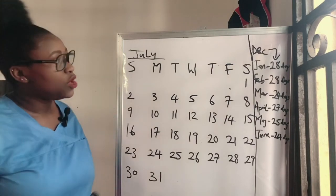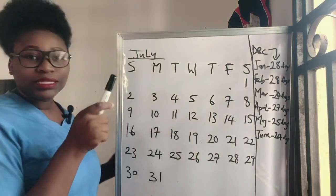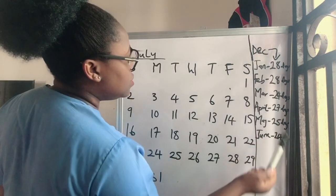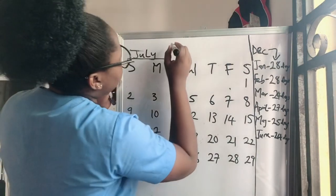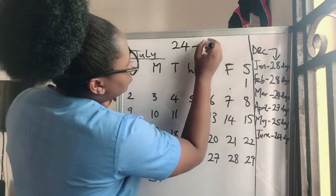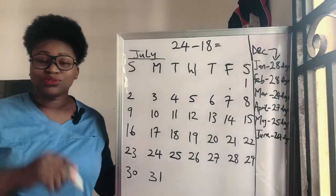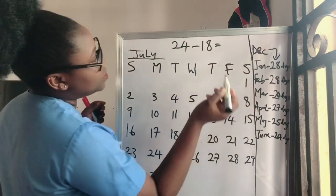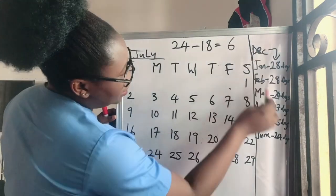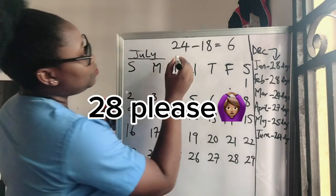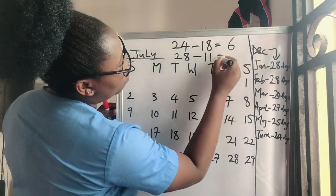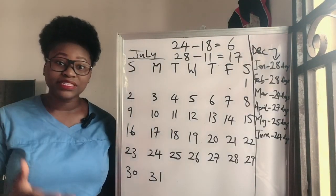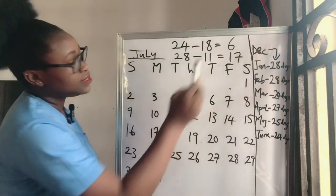Here's how to calculate ovulation dates with irregular cycles. Look for the shortest cycle length among all six months: 28, 28, 24, 27, 25, 24 — the lowest is 24. Subtract 18 from 24: you get 6. Then take the highest number — 28 — and subtract 11: you get 17. This means her fertile period is going to start from cycle day 6 to cycle day 17.